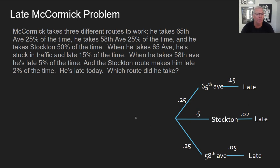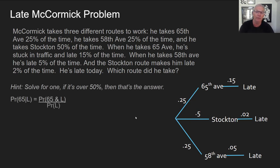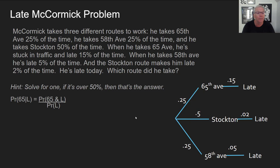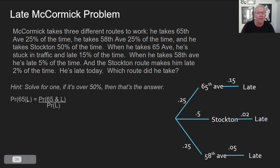Now we're in a position to understand what we're asking. We've got three options. The hint is: solve for one of them first — it doesn't matter which. If one is over 50%, then the other two conjoined have to be less than 50%, so you have the answer. Or you can just keep solving for the other options. Let's solve for 65th Avenue: given that he's late, what's the probability he took 65th Avenue?